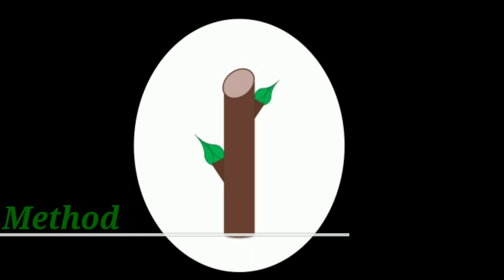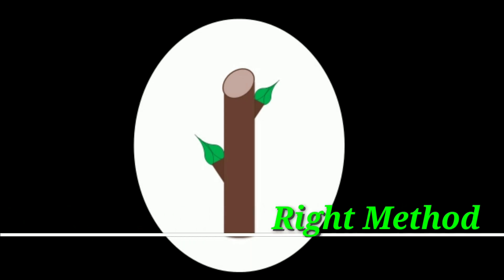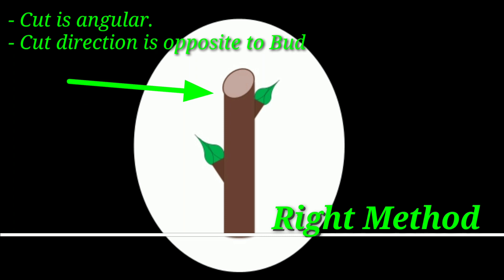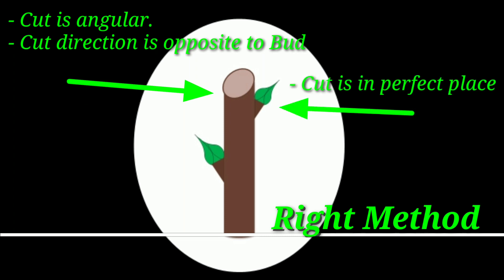After explaining the wrong practices, we will now explain the right practice of the pruning process. In this picture you can see that the cut is angular and opposite to the bud direction, and it is neither too close nor too far from the growing bud. Due to this, water will not accumulate near the bud area and will easily run off. Also, the proper distance of the cut will help nutrients flow toward the growing bud and the bud will grow fast. We should always follow this right method of pruning to keep our plants and trees safe and healthy.